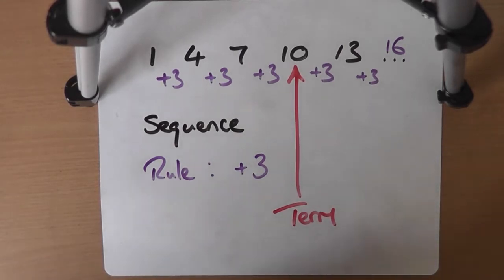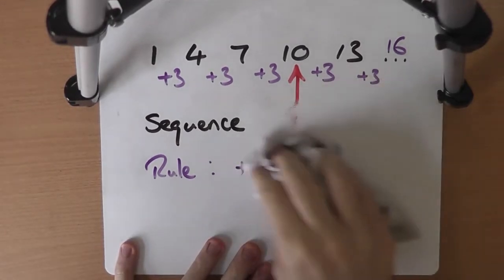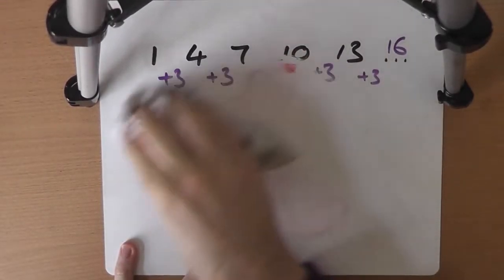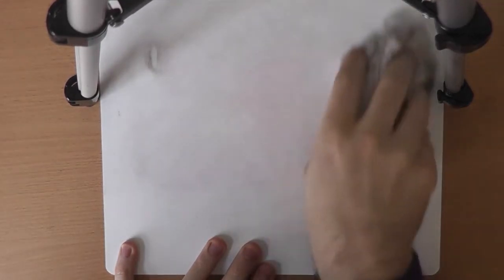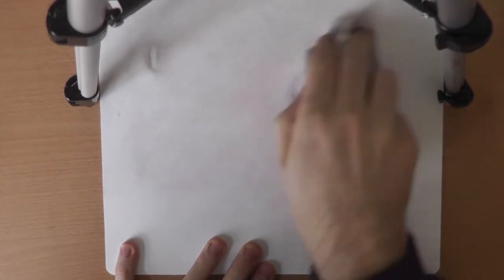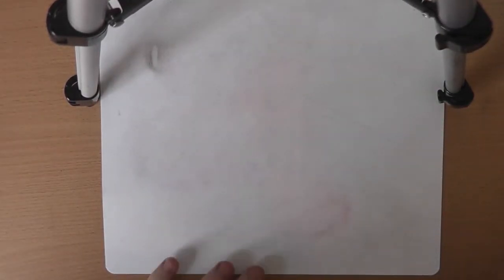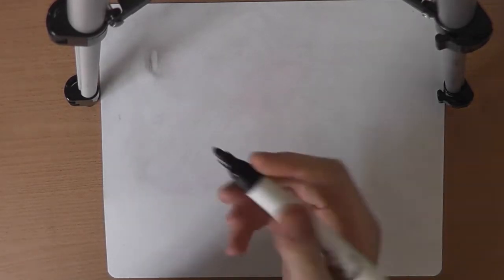We can have all sorts of number patterns, all sorts of rules for generating sequences. As long as there is a set pattern of some sort that repeats and doesn't change, then we have a sequence. And we can define a rule for that sequence.